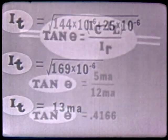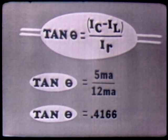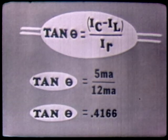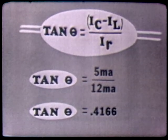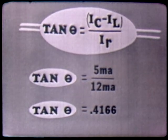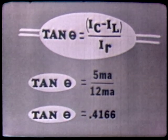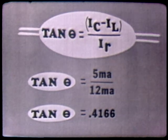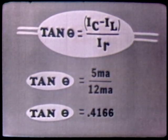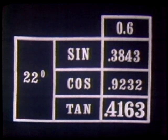What about the angle of our current? We can use the tangent trig function rather than the protractor to determine this angle. The tangent of angle theta is equal to IC minus IL divided by IR. Substituting, the tangent of angle theta equals 0.4166. Looking at our trig table, 0.4166 is nearest to 0.4163, which is the tangent of 22.6 degrees. So we have determined our phase angle using the tangent trig function.